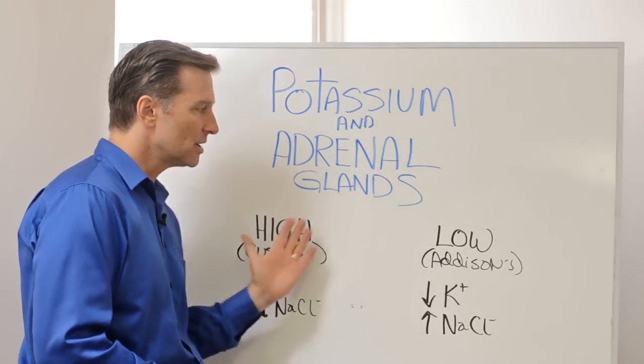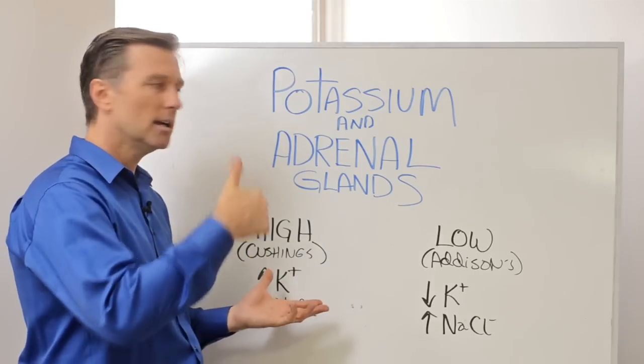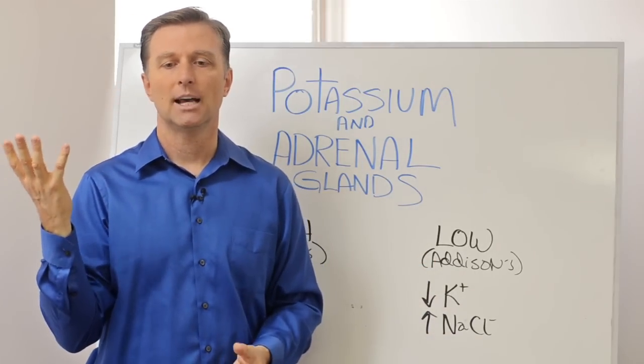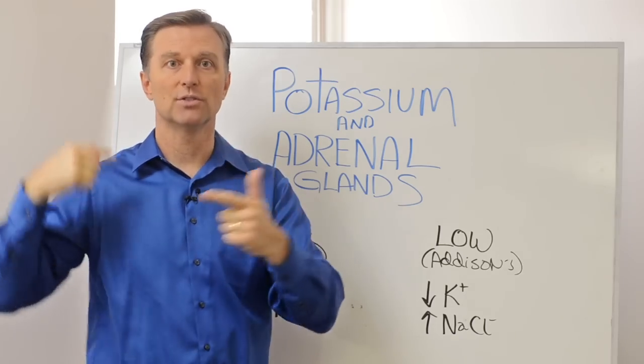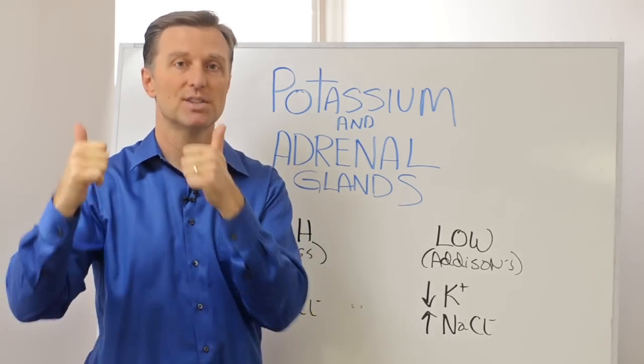There's two types of adrenal problems. You have adrenals that are hyper, high, and hypo, low adrenal. So you have someone that has a disorder called Cushing's where your adrenal is pumping out lots of cortisol. That's a high adrenal. It's a hyper state.